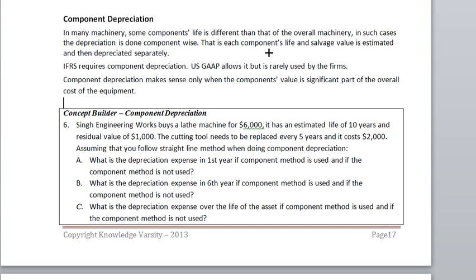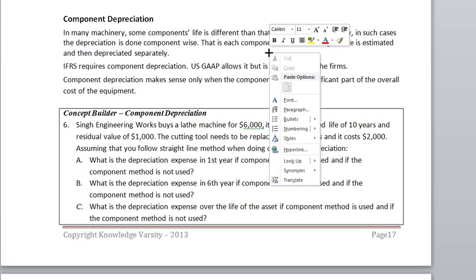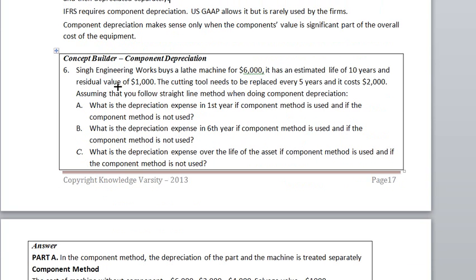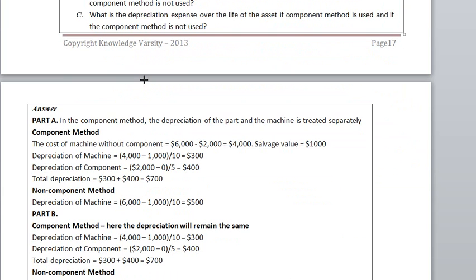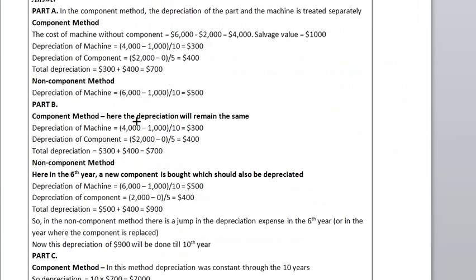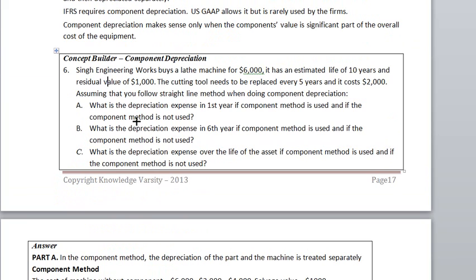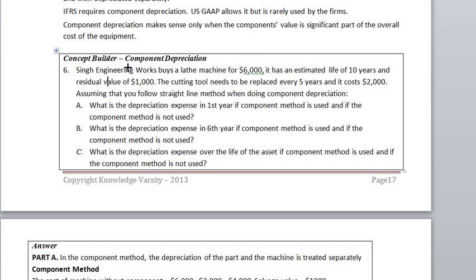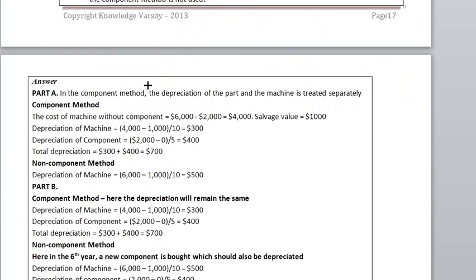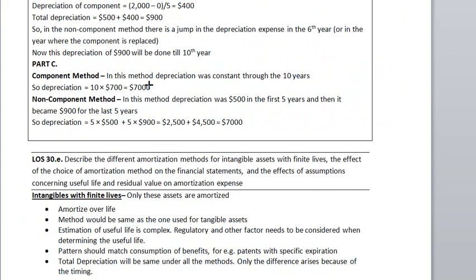Component depreciation is allowed under both IFRS and US GAAP, but rarely used under US GAAP. The key focus for exam purposes is the depreciation in the year when you have replaced the component — that year, depreciation shoots up from $500 to $833. That is the key takeaway. This completes the topic of component depreciation.